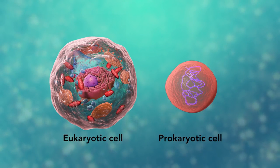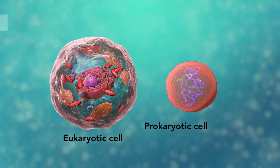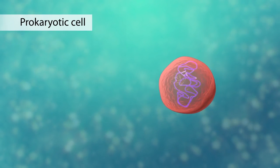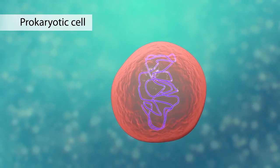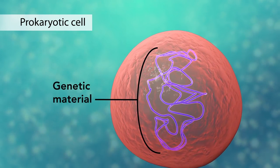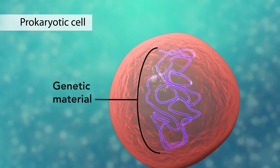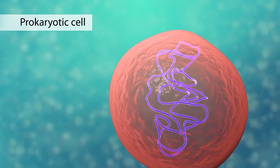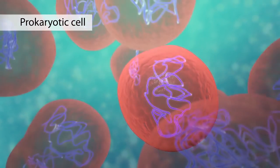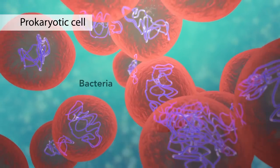The second category is prokaryotic cells. They don't have a nucleus or membrane enclosed organelles. They do have genetic material but it's not contained within a nucleus. Prokaryotic cells are always one-celled or unicellular organisms such as bacteria.